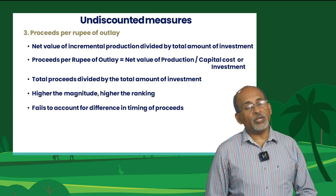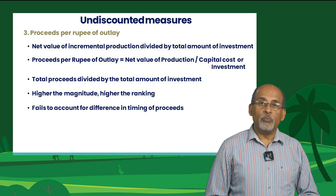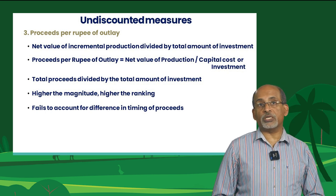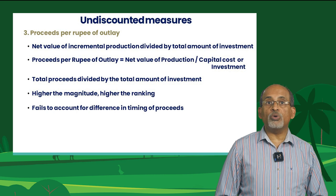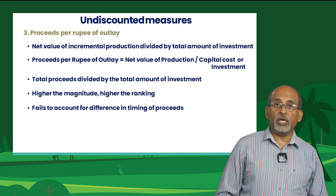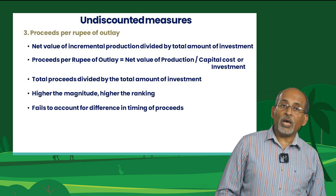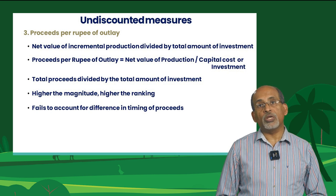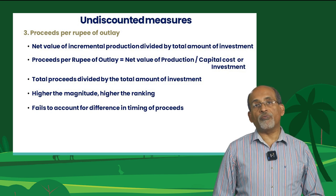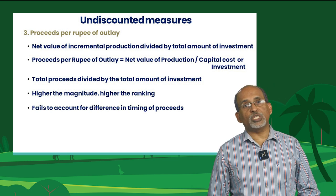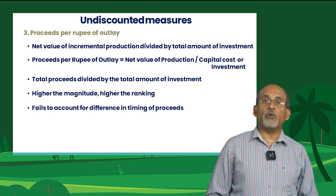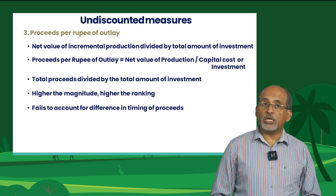The third undiscounted measure is proceeds per rupee of outlay. It is the total net value of incremental production divided by the total amount of investment — the ratio of net value of production to the capital cost or investment. The limitation of this measure is that it fails to consider the differences in the timing of proceeds, or in other words, it ignores the time value of money.